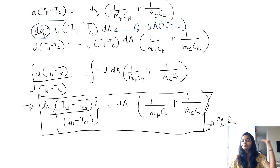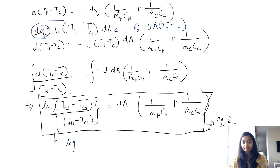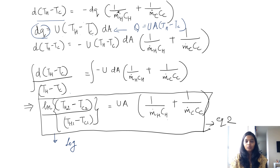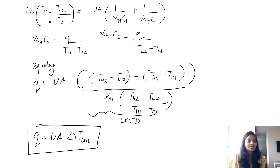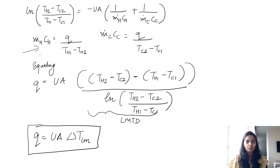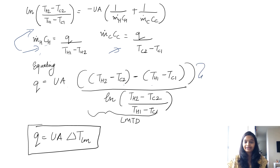Integrating on both sides, using the values at the two ends, we get the equation where the log term comes into play. The log of the temperature difference between the two ends equals UA times (1 over MH CH plus 1 over MC CC), representing both heat capacities. Replacing MH CH using the previous equation — which relates to the temperature difference between the two ends — and substituting both into this equation, we get Q equals UA times (TH1 minus TC1) minus (TH2 minus TC2), all over the natural log of those differences.